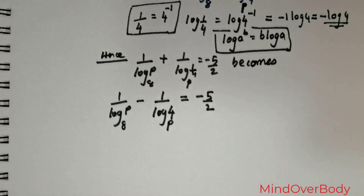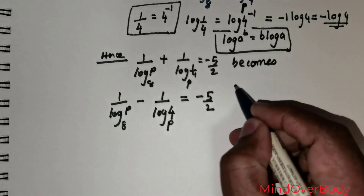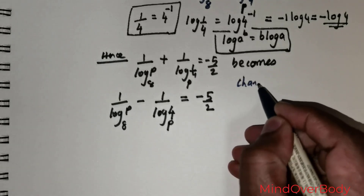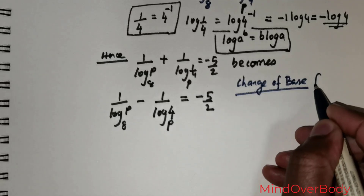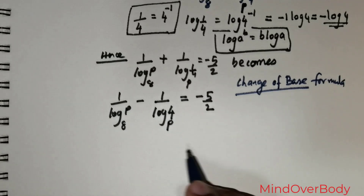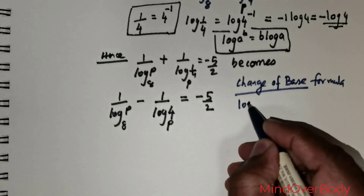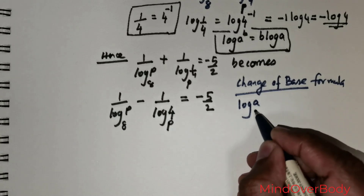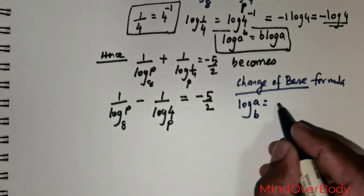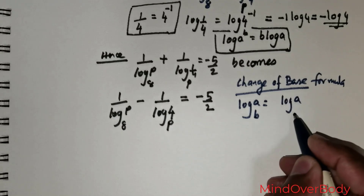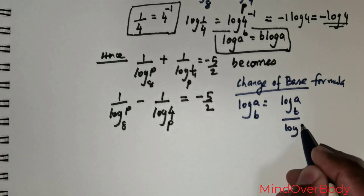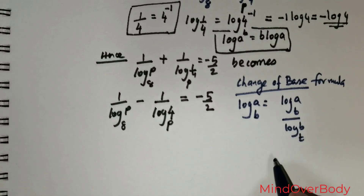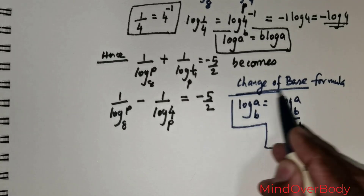Now we are going to be using what is called the change of base formula. What exactly does this mean? If you have a quantity like log of a to the base b, then you can rewrite it with a new base t as log of a to base t, divided by log of b to the same base t.